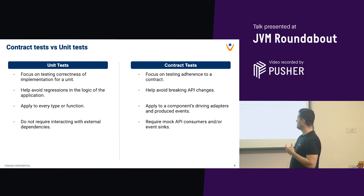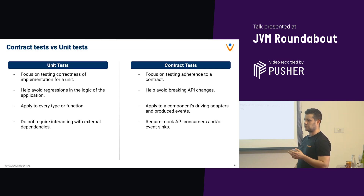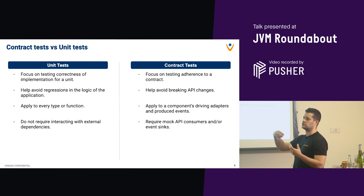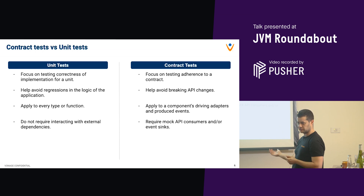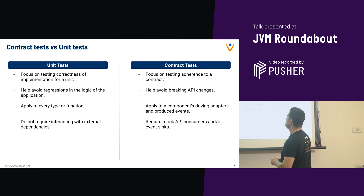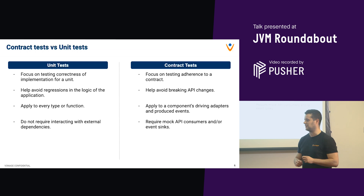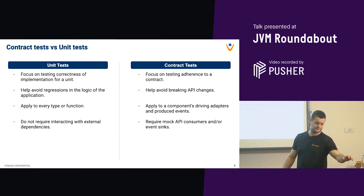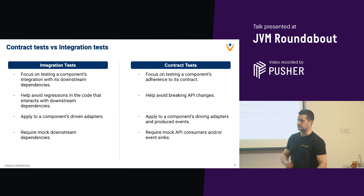Unit tests apply to every type of function - in Java, classes and methods, it doesn't matter too much. Contract tests, on the other hand, only apply to driving adapters - essentially your inbound ports. Think of a web server: that's an entry point to your application where external consumers access your API, and each entry point will have its own contract test. Unit tests should not require external dependencies, while contract tests do require mock API consumers or Havensinks.